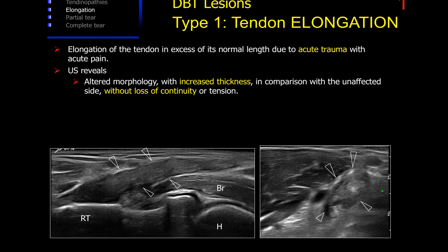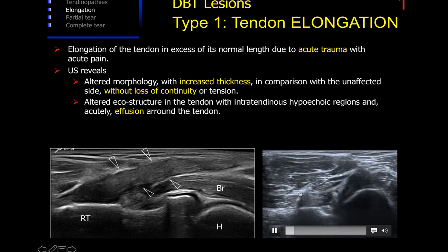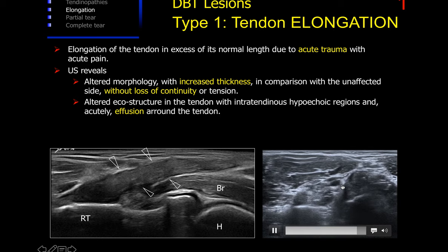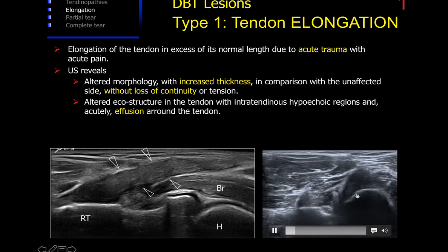Type 1 injuries are the least severe form of injury — a tendon elongation just beyond the elastic capacity of the tendon. Ultrasound shows an increased tendon thickness. We can see the thickness of the tendon is clearly enlarged in comparison with the unaffected side, but without loss of continuity. We see continuity in the attachment from the tendon to the radial tuberosity, and we find an altered echostructure with hypoechoic regions and effusion in and surrounding the tendon.